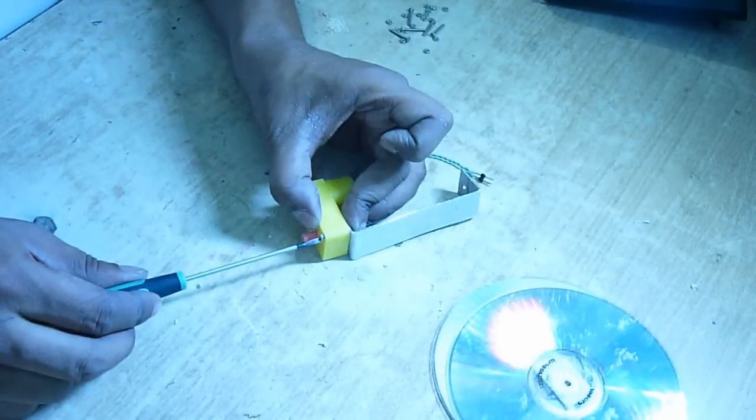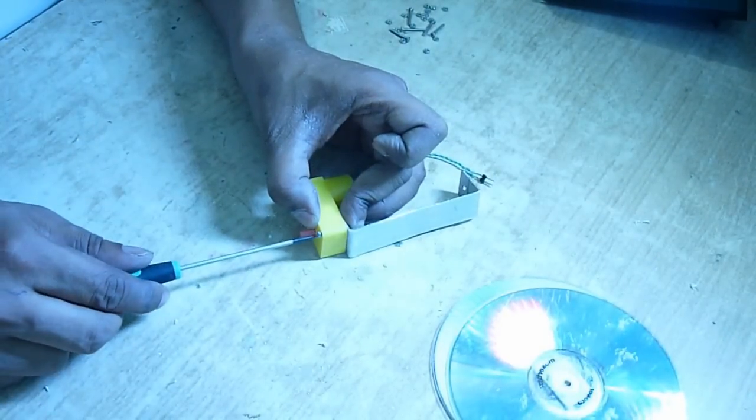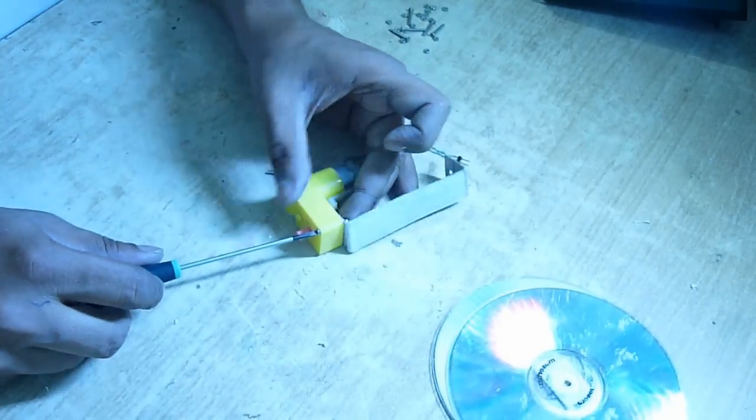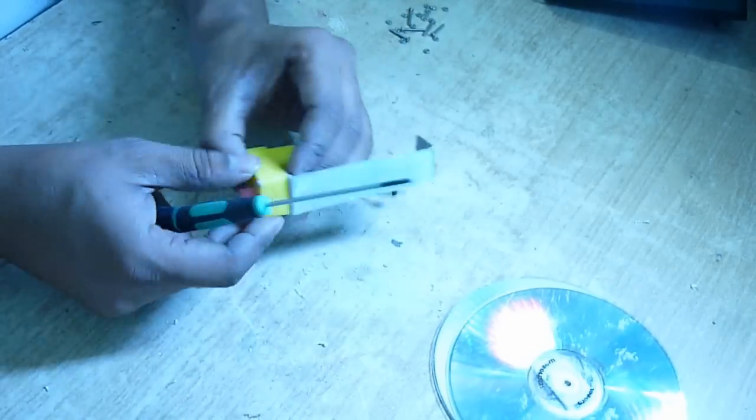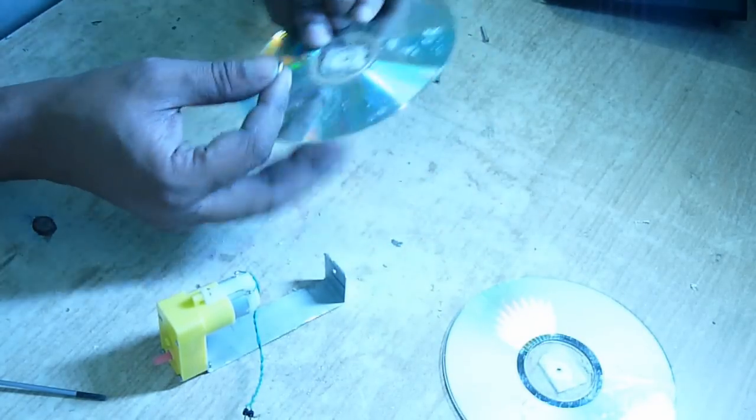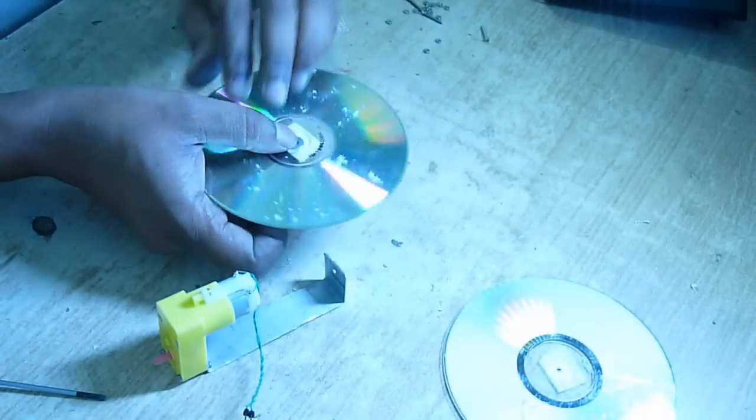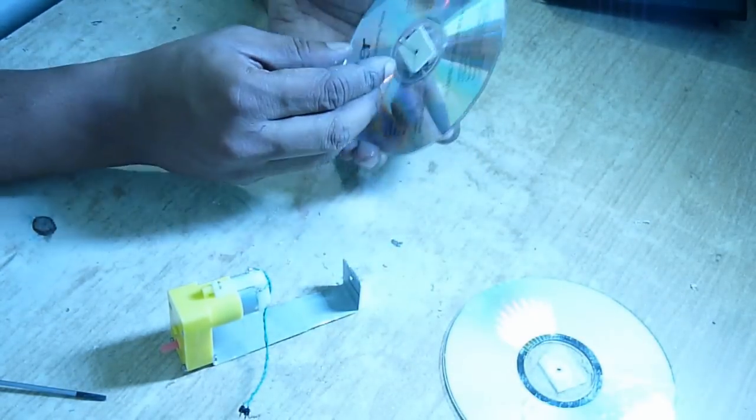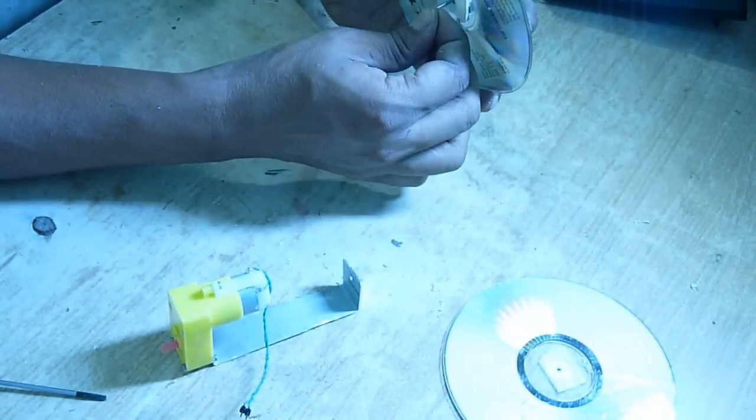Now take one CD, at the center put a screw and tighten it on the other side with a nut like this.